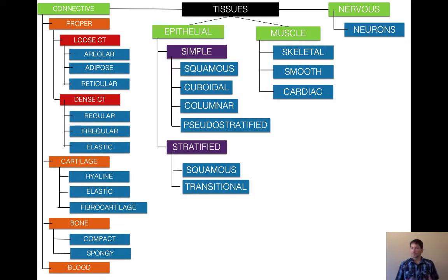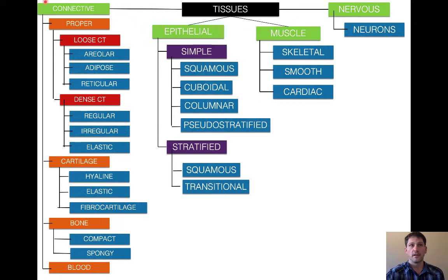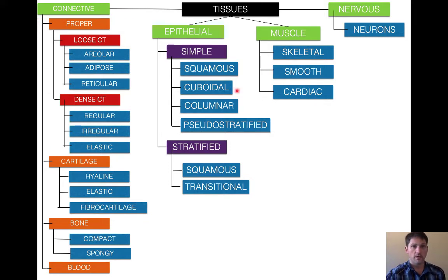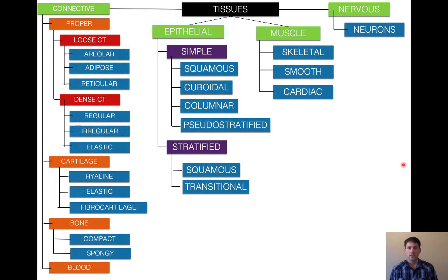Here's that tissue chart again. Make sure you practice this a lot and use it as a study tool. We have nervous tissue, muscle, epithelial, and connective tissue, and today we're working through all of these. Get yourself some water and a snack — it'll be about an hour of lecture, including pausing to work on some of these practice problems.